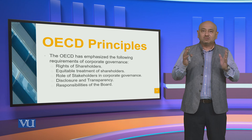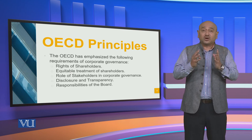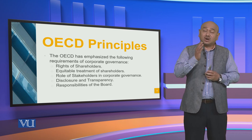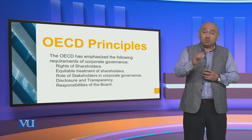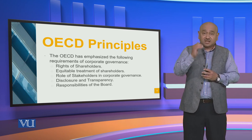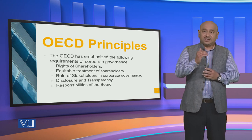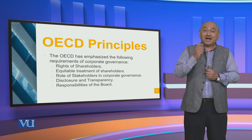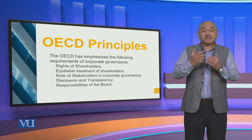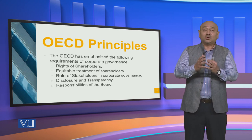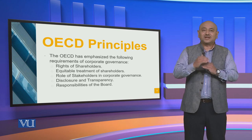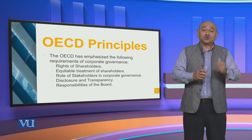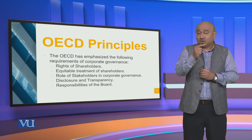Disclosure is no more a prerogative, an option, or a luxury — disclosure is now mandatory. In the new accountability laws, if someone is not disclosing the misgovernance, misfeasance, or irregularities of anyone they know within the institution, then that person becomes an accomplice. That ensures transparency. Another way of achieving transparency is establishing open and barrier-free communication systems, so that if there is any wrongdoing, people are able to disclose it at the appropriate level. Disclosure and transparency go hand in hand, and that is why OECD is focusing on this.